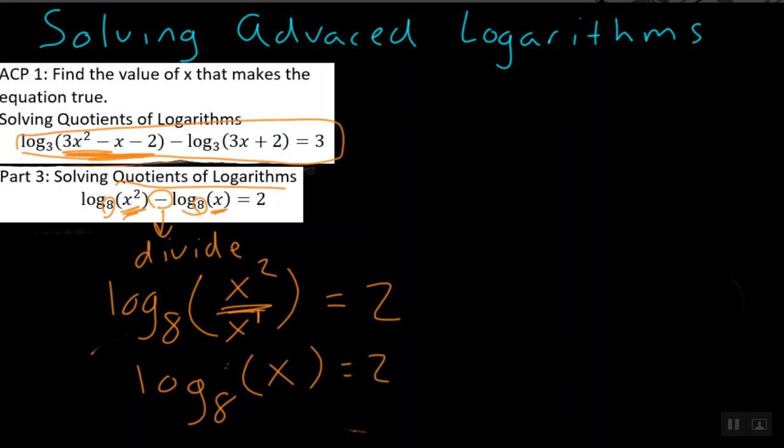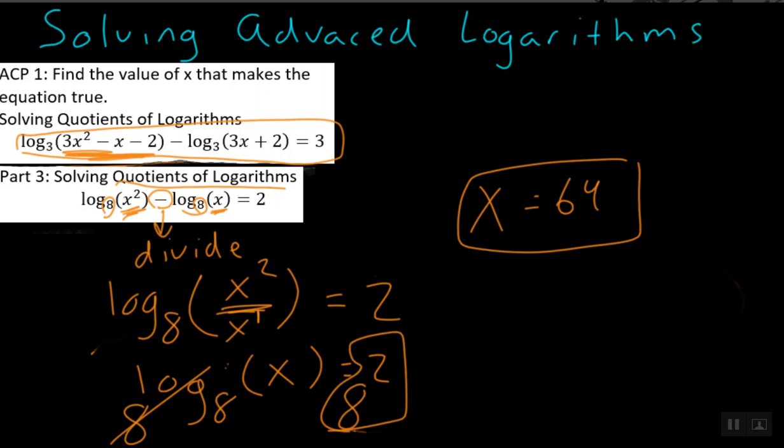And from here, you can tell that this problem is now like part 2. To get rid of a log base 8, we base 8 and base 8, and those cancel. And now we have x is equal to 8 squared, which is 64. So pause the video, finish taking notes, and at this point, we are ready to tackle the ACP style problem.